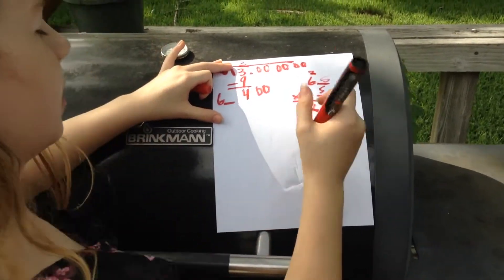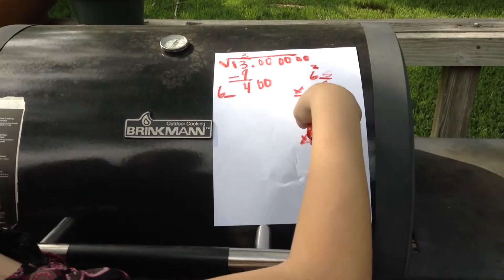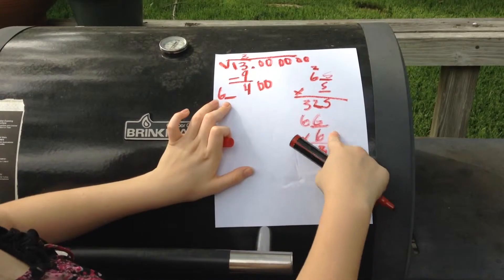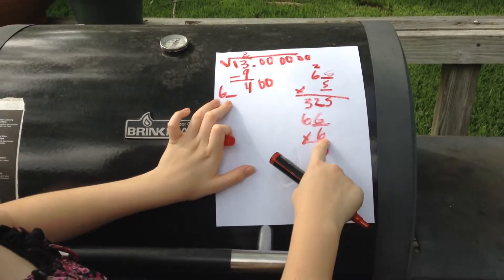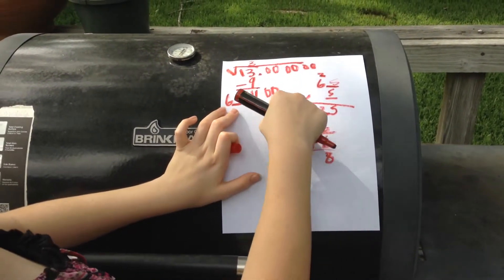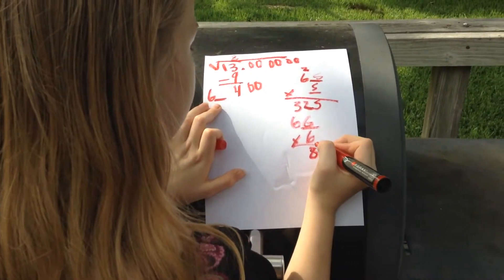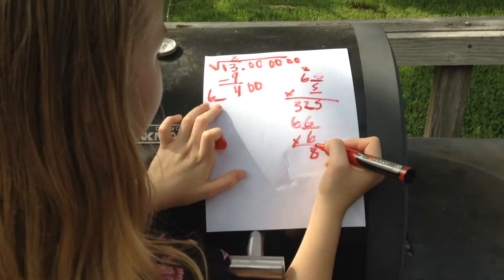So what are you doing? I'm multiplying it by 6. I'm going to put it right there to see what number I can multiply by that number to get the closest to 400. Is it okay if you go over it? No. I can't go over it.